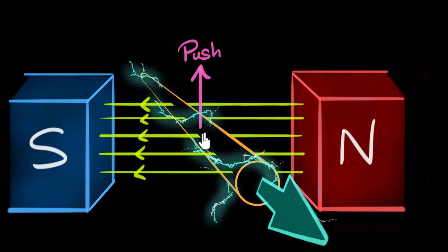And if you were to push it down, the current will reverse. The current direction will also depend upon the direction of the magnetic field. If you reverse the direction of the magnetic field, the current again will reverse.